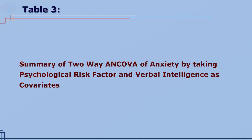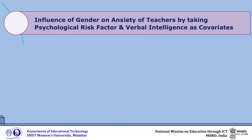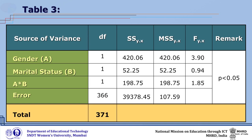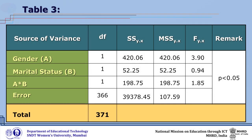From the SPSS output, Table 3 has been formed. From Table 3, one can see the influence of gender on anxiety of teachers by taking psychological risk factor and verbal intelligence as covariates. It is evident that the adjusted F value for gender is 3.90, which is significant at the 0.05 level with df = 1/366. This indicates that the adjusted mean scores of anxiety of male and female teachers differ significantly.